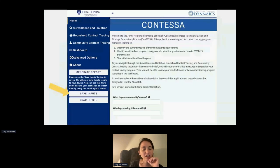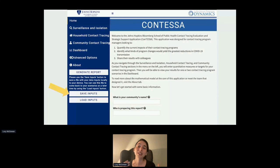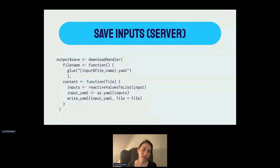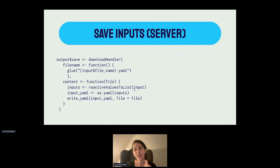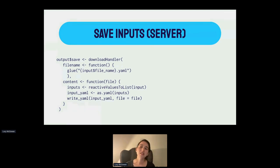The last feature is saving and loading inputs, because sometimes people wanted to save their work after entering 20 or 30 inputs and then reload the page with the same inputs later. This was done with another download handler. We allowed them to input a file name, calling it filename.yaml. The inputs were all the values from the Shiny dashboard, stored using reactive values to list, which takes all reactive values and sticks them in a list. That list is then converted to a YAML file and output so the user can reload it later.